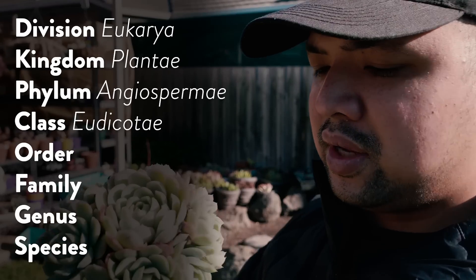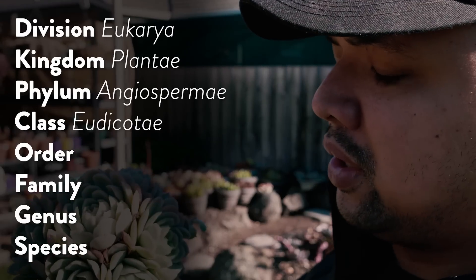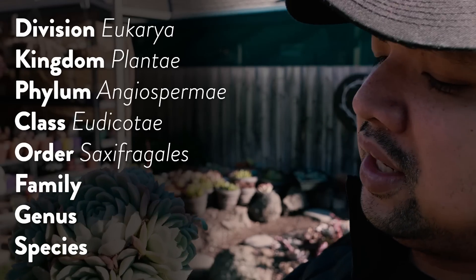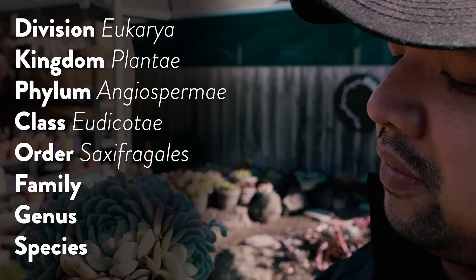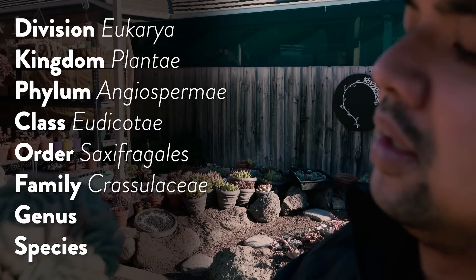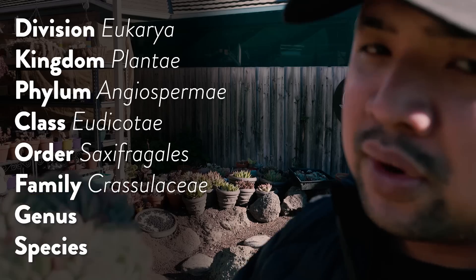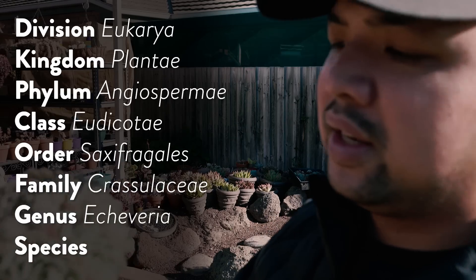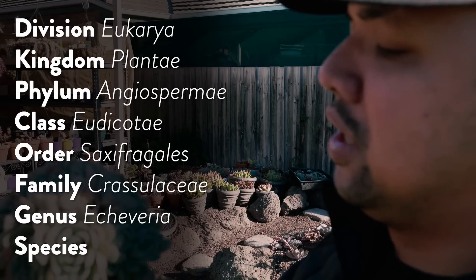For class, they are Eudicoti, and order Saxifragilis, family of Crassulaceae, genus of course Echeveria, and a species name of elegans. So for the most part, we're just familiar with the last two of that hierarchy — the genus and the species.